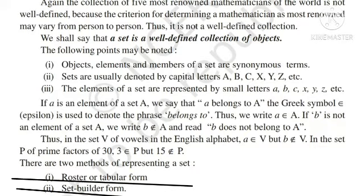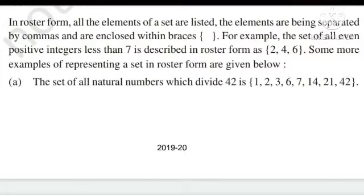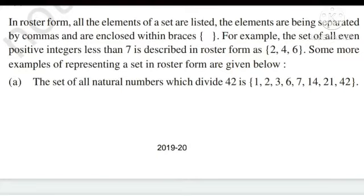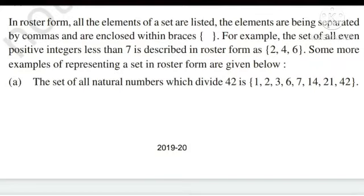Now there are two types of methods by which we can represent a set: number one — roster or tabular form, and number two — set builder form। In roster form, all the elements of a set are listed, separated by commas, and enclosed in curly brackets। For example, the set of all even positive integers less than seven is described in roster form as {2, 4, 6}।